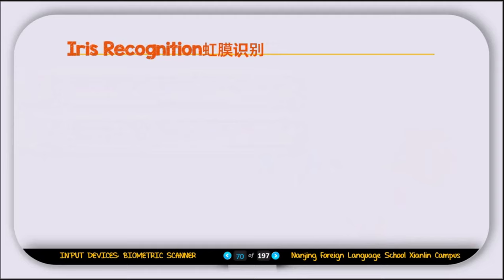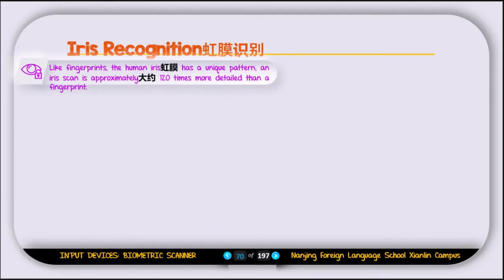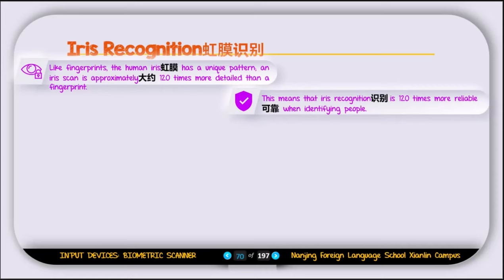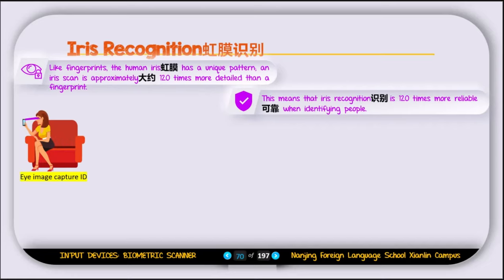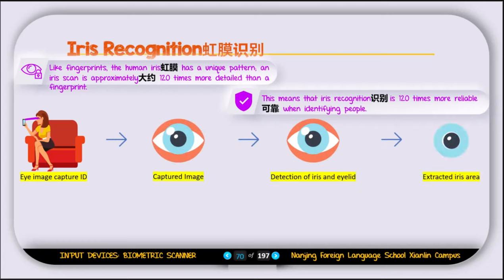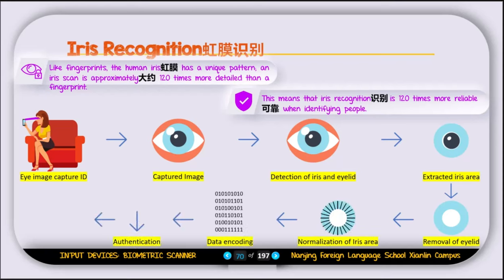The next biometric type is iris recognition. Like a fingerprint, the human iris has a unique pattern. The iris scan is approximately 120 times more detailed than a fingerprint, making iris recognition 120 times more reliable for identifying people compared to fingerprint scanning. The iris recognition software works by scanning and mapping the unique pattern of the iris.